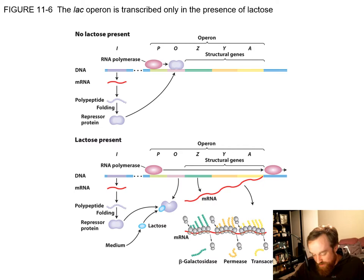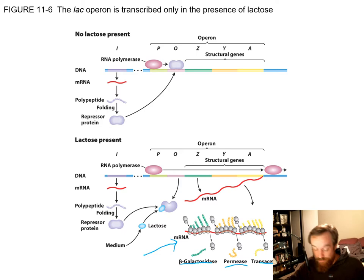As we can see in the diagram, this mRNA is translated into beta-galactosidase, which is important for breaking lactose into galactose and glucose; permease, which allows the cell to take up more lactose; and the third gene, which is not important for lactose metabolism.